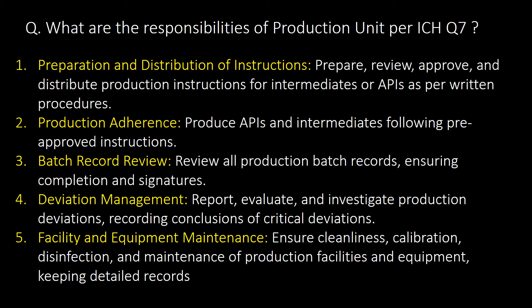What are the responsibilities of the production unit as per ICH Q7? Preparation and distribution of instructions, production adherence, batch record review, deviation management, and facility and equipment maintenance are the key responsibilities of the production unit as per ICH Q7.